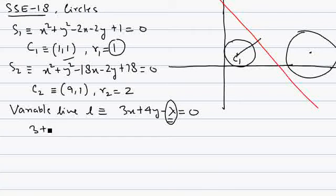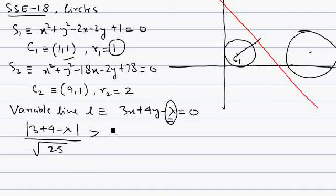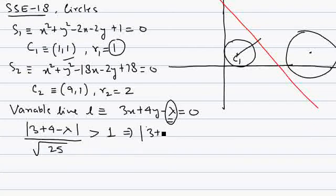Applying that condition: distance of (1,1) from the line, which is |3 + 4 − lambda| divided by root of 25, should be greater than 1. So |3 + 4 − lambda| should be greater than 5. It's a positive quantity so we can cross multiply.